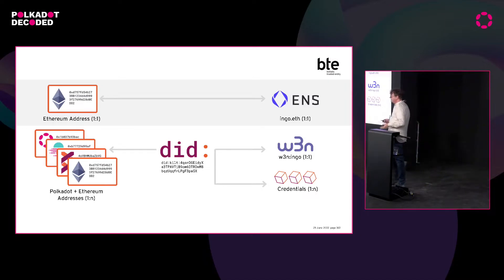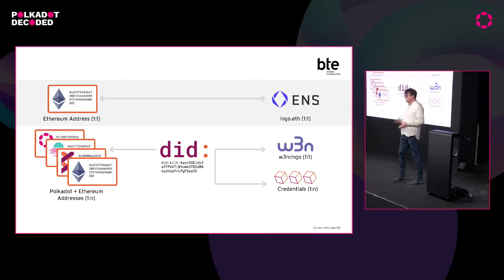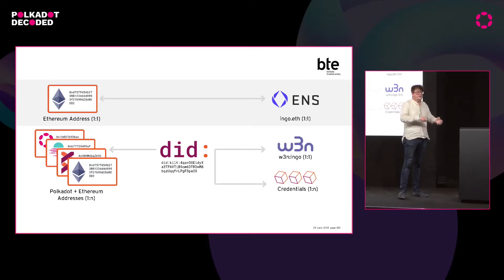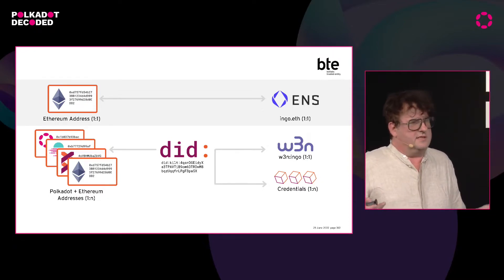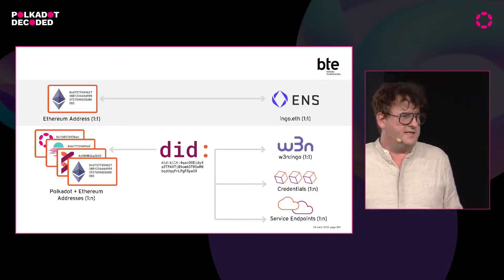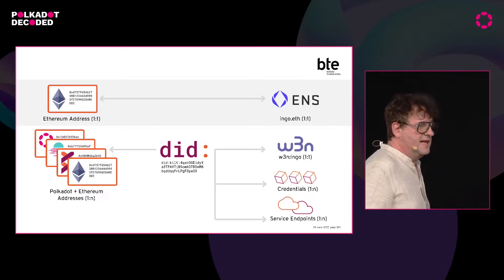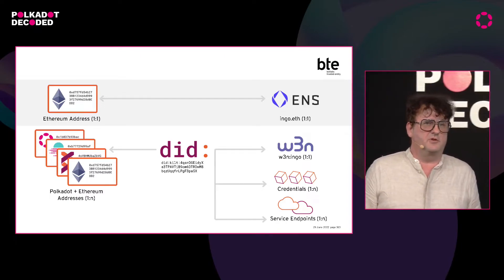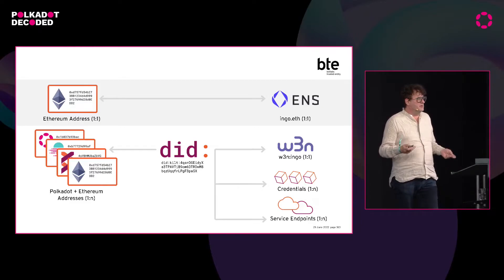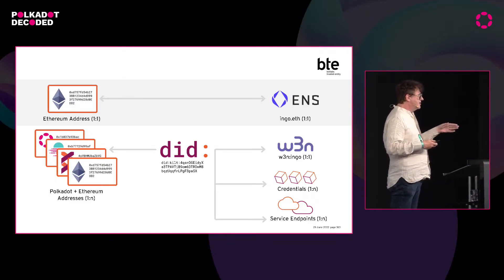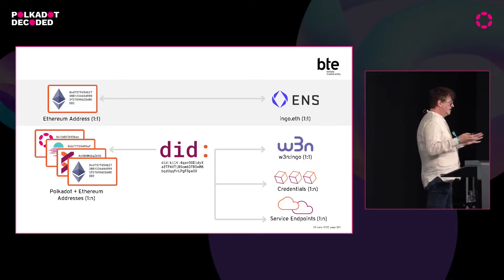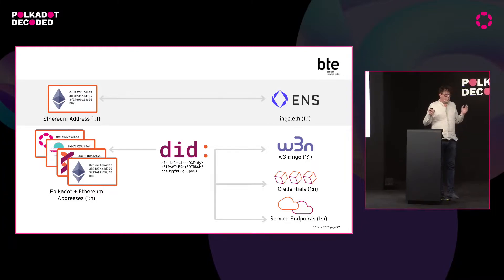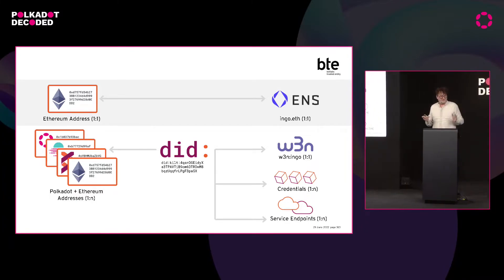Then comes the big step: you can connect verifiable credentials from different trusted entities to your DID, and then they are valid for all your crypto addresses, which makes the concept far more powerful. There's another feature of DIDs: you can also have service endpoints connected to a DID — that could be, for example, your website, or a communication channel which is always open where people can reach you. So these things are all integrated in the DID concept, which makes it a little bit more powerful than ENS. And this is all there in the Polkadot ecosystem.